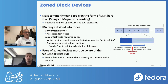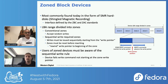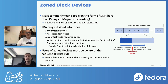What are zone block devices? Zone block devices are most commonly found today in the form of SMR hard drives - that's shingled magnetic recording. The zone block device interface is defined by the SCSI ZBC and ATA ZAC standards. On a zone block device, the LBA range exposed by the device is divided up into zones, and these zones can either be conventional zones, which accept random writes - basically behaving like a hard drive you're used to.